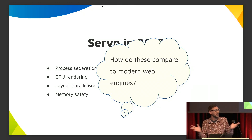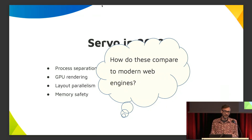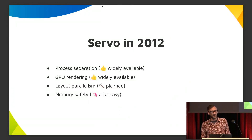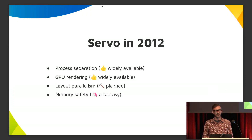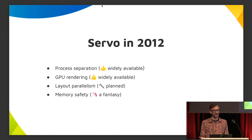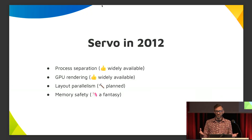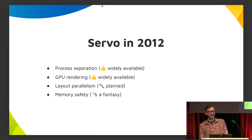This was 12 years ago — you may be wondering how this compares to the state of things now, because a lot of work has gone into web browser engines. Process separation is something that all browsers you use today take advantage of, whether it's Gecko, Edge, or Chrome. GPU rendering is much more common too — in fact, one of the components Gecko is using from Servo is the WebRender component, which does GPU rasterization. So Servo was very forward-looking with these features.